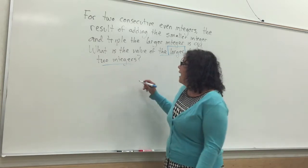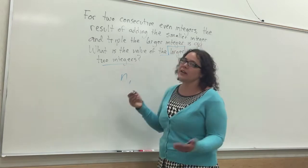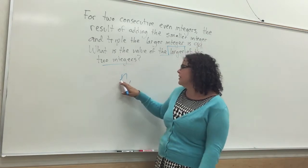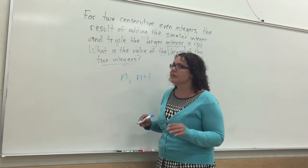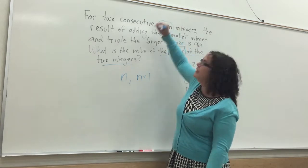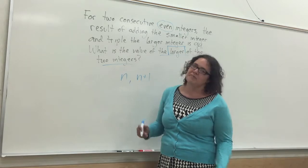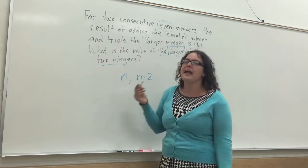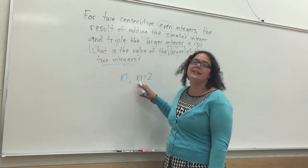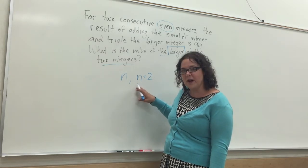As we know, consecutive numbers are in a row, so the number after n is n plus 1. We're not dealing with consecutive integers here, though. We're dealing with consecutive evens. The difference between 2 and 4 is 2. It's the difference between any consecutive integers. So we've already defined our two variables for this problem.